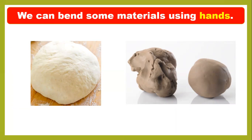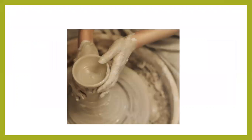We can bend some materials using our hands. Can you change them into different shapes by your hands? Yes, you can change them very easily because these materials are very soft. Look at this picture — this is clay, and you can change it by your hand into different shapes because it is a soft material.